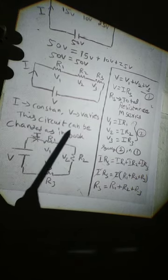In summary: current I is constant, voltage V varies. We have to see the circuit and see the resistance. V equals V1 plus V2 plus V3. V equals IR, where IRS is the total voltage with RS being the total resistance in series. V1 equals IR1, V2 equals IR2, V3 equals IR3.